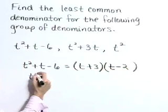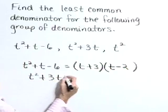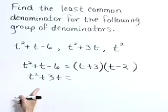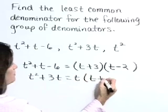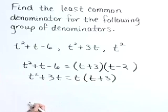t squared plus 3t, our next proposed denominator, factors as t times t plus 3 as we pull out that greatest common factor of t.